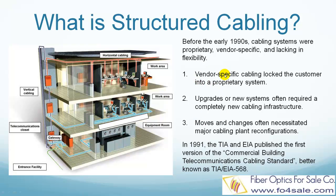In the mid-1980s, the EIA was asked to develop a specification that would encourage structured, standardized cabling. In 1991, the TIA published the first version of the Commercial Building Telecommunications Cabling Standard, better known as TIA EIA 568.